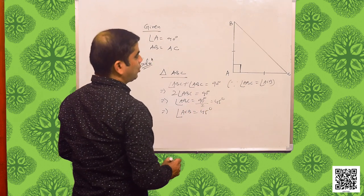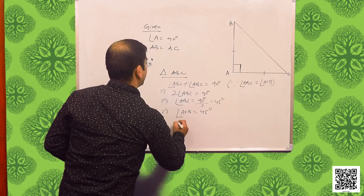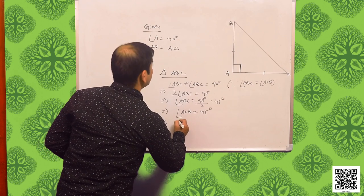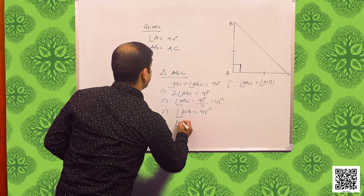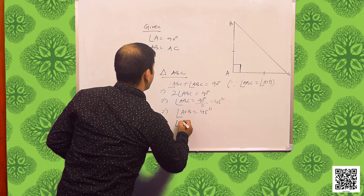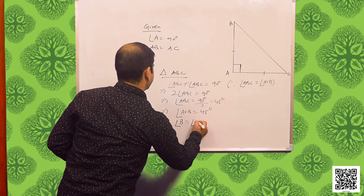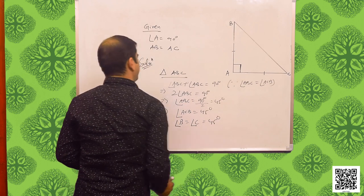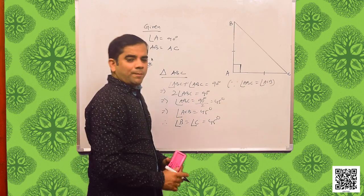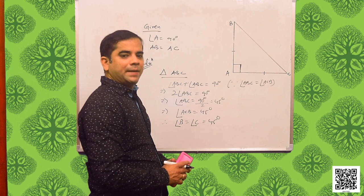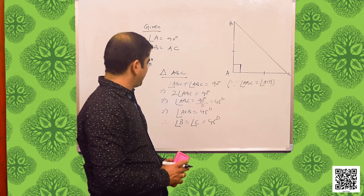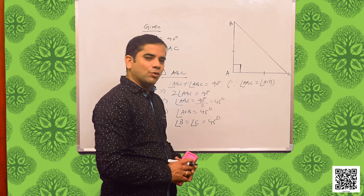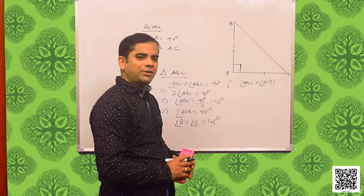Hence we have proved that angle B is equal to 45 degrees. Both angle B and angle C have the value of 45 degrees. Hope you have understood.